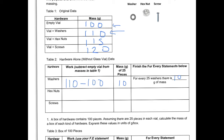This would be 10, so there is 10 grams of mass for the washers. For the hex nuts, I would do 115 minus 100 and get 15, so for every 25 hex nuts there is 15 grams. That part's pretty easy.